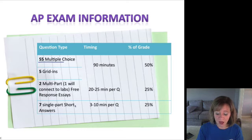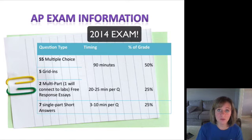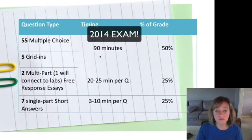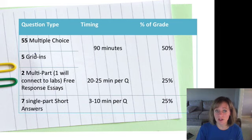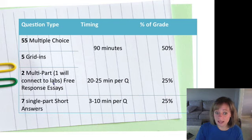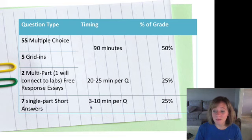Let's talk about the AP exam. It's going to be different than in years past, so if you get an exam study book, please make sure it is up to date for the 2013 test. There are 55 multiple choice and five grid-ins, and you have 90 minutes for both. A grid-in means it's a math problem and you fill in the number you get as your answer. That's 50% of your grade. The other 50% are essays — two longer essays, one of which will connect to the labs, and then seven short answer questions of three to ten minutes each.